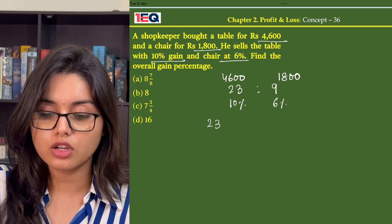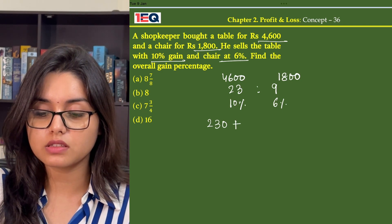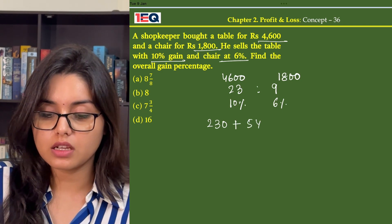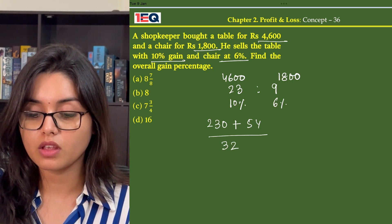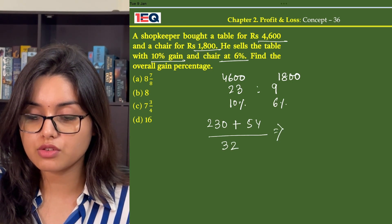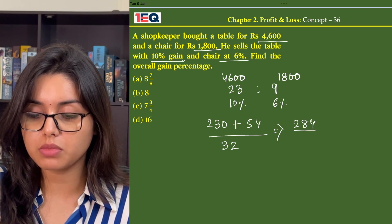So we find the totals and get 230 plus 54 divided by 32, that is 23 plus 9. From here we get 284 divided by 32.